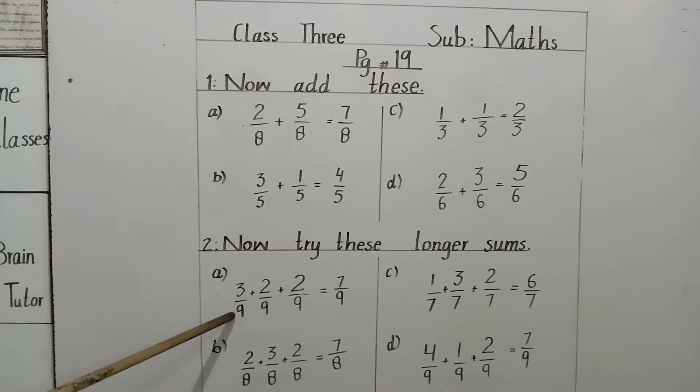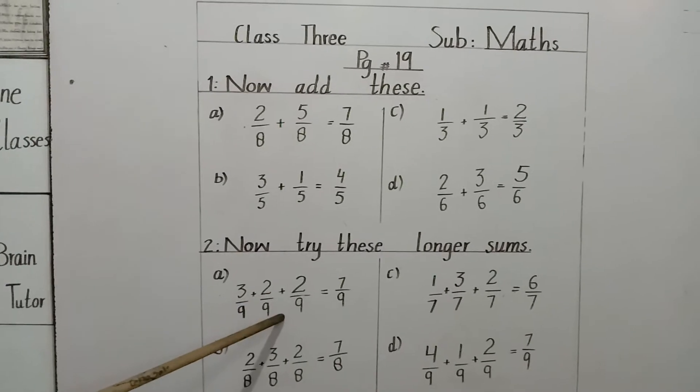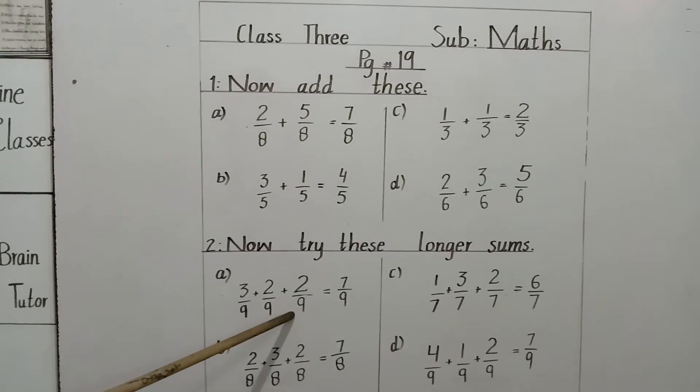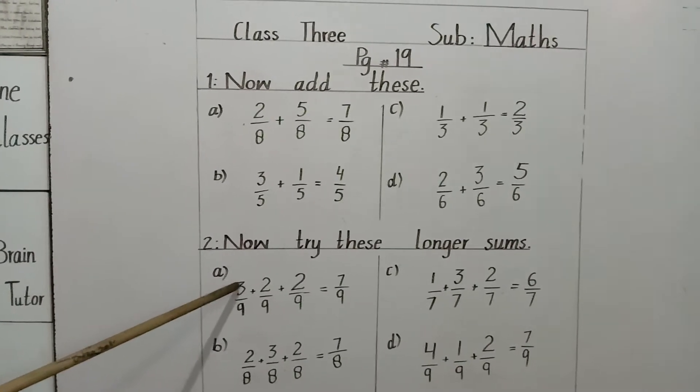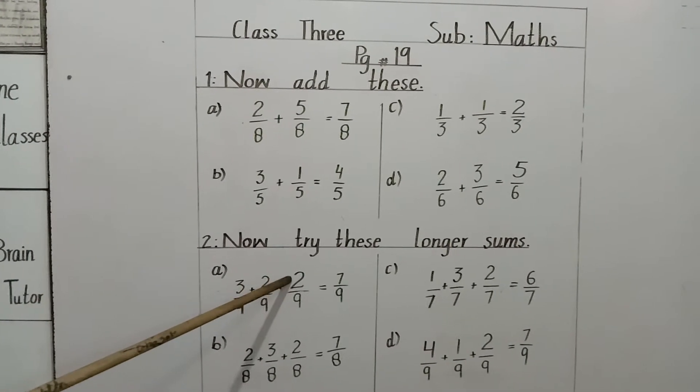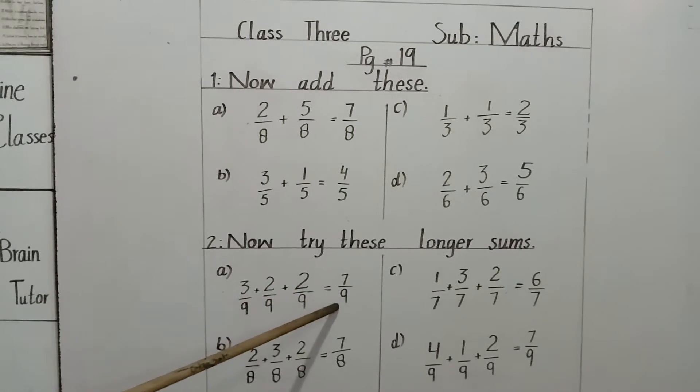3 by 9 plus 2 by 9 plus 2 by 9. Denominators are same. We have written here 9. We will add just numerators. 3 plus 2 is 5. 5 plus 2 equals 7. 7 by 9.